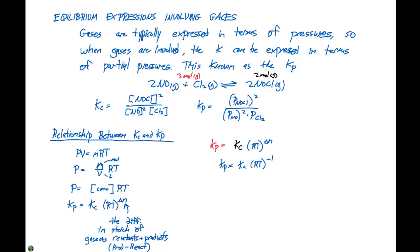So if for this particular reaction we're given the Kp, if the Kp for this reaction is going to be 1.9 times 10 to the minus 3 at 25 degrees Celsius, we can determine the Kc.